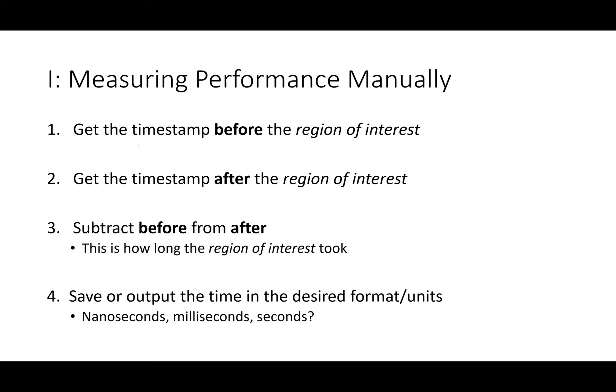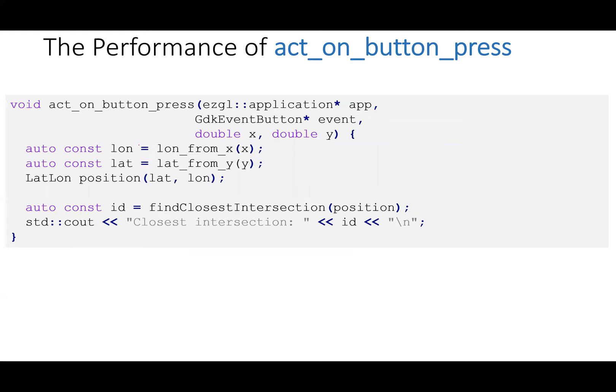So let's talk first about measuring performance manually. The technique is basically: get the timestamp before the code you care about, get the timestamp after, subtract before from after, and print it out. Let's take the act-on-button-press routine from last tutorial. If we want to time this, I want to get the time right at the start of the function and right at the end, and print out the difference.